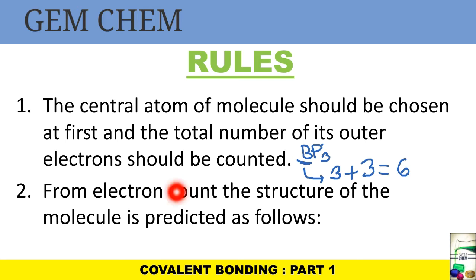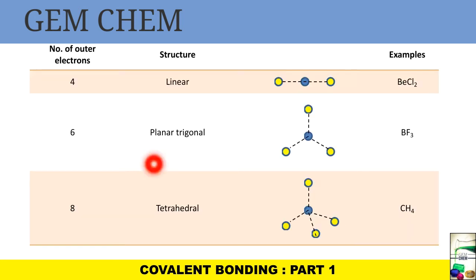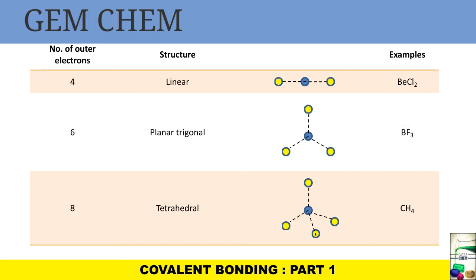The next rule states that from the electron count of the outer shells the structure of the molecule can be predicted. If you get a total of four outer electrons, the structure will be linear — for example BeCl2. For beryllium it is two, plus two contributions from the two chlorines, giving two plus two equals four.